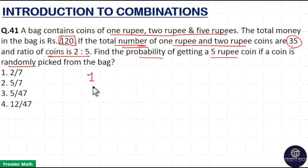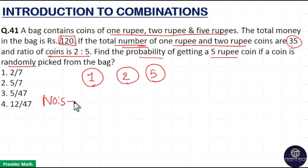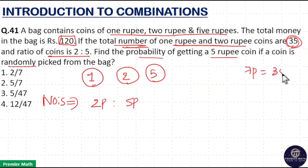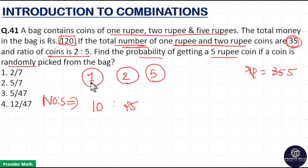The denominations are one rupee, two rupee, and five rupee coins. The number of one rupee and two rupee coins are in the ratio two is to five, meaning two parts to five parts. Total number of one rupee and two rupee coins are 35, so two plus five equals seven parts equal to 35, meaning one part equals five. Therefore two parts equals 10 and five parts equals 25.